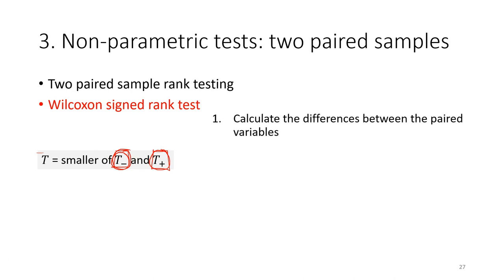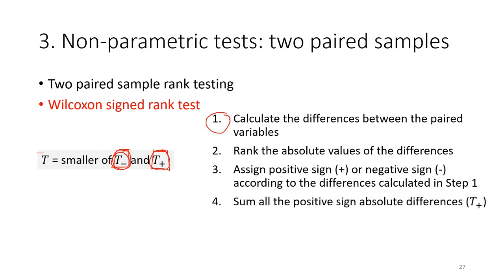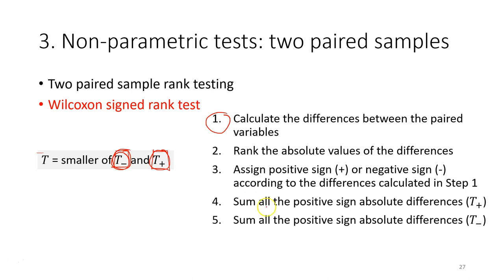The steps involved are: first, calculate the differences between the paired variables; second, rank the absolute values of the differences; third, assign positive or negative signs according to the differences calculated in step one; fourth, sum all the positive-sign absolute differences; fifth, sum all the negative-sign absolute differences; then choose the smaller of the two sums as the test score.